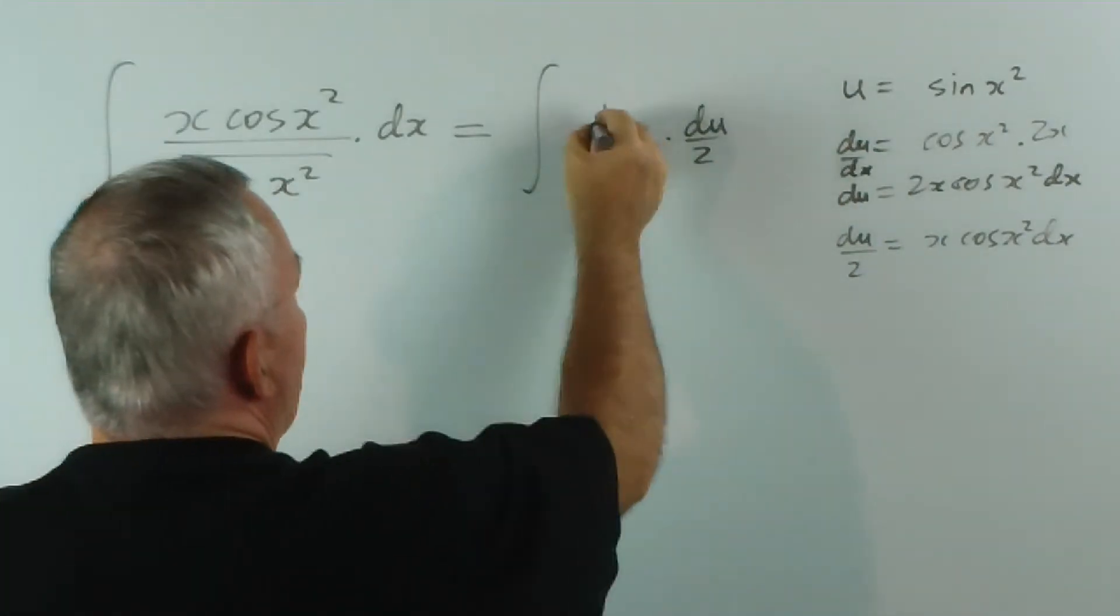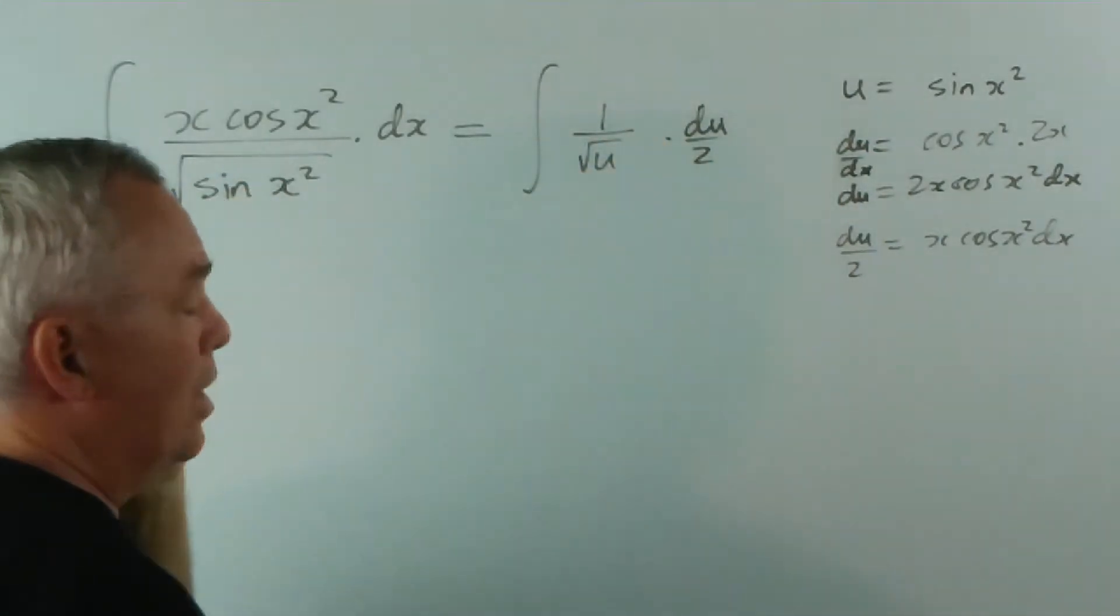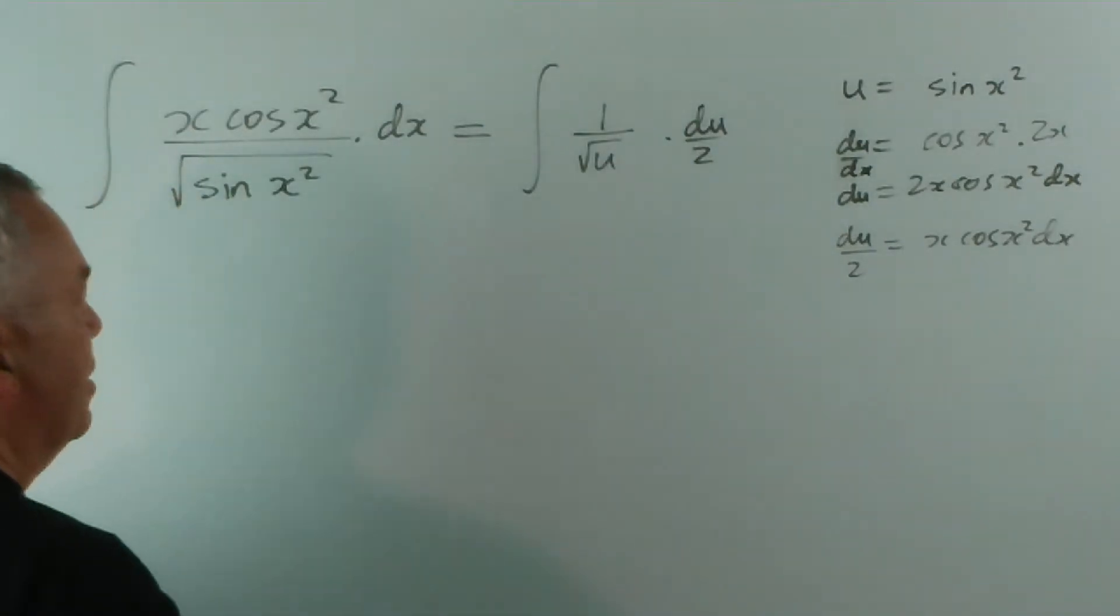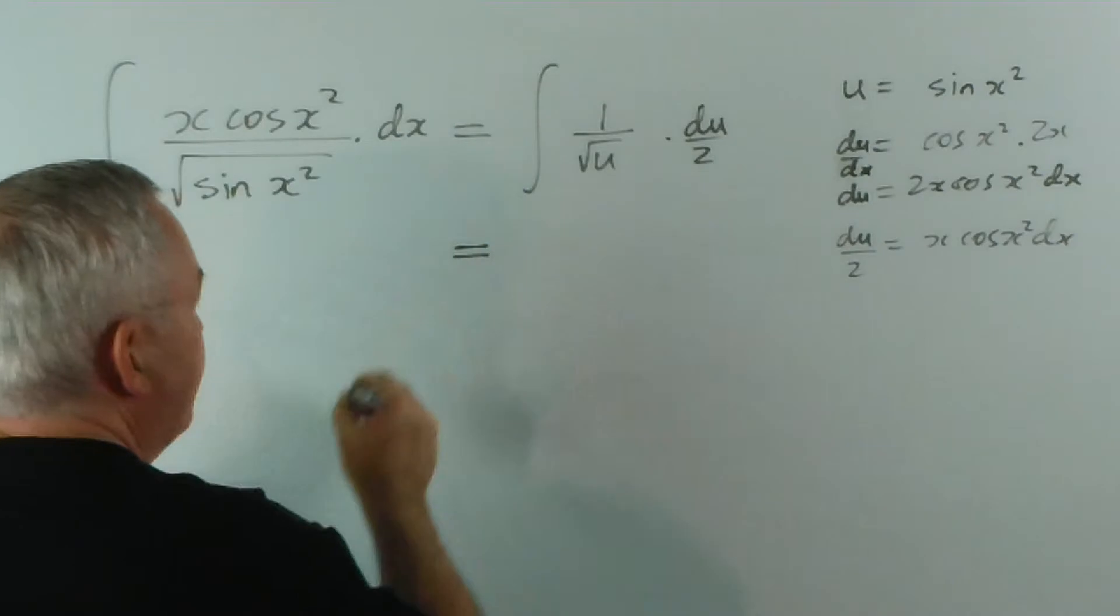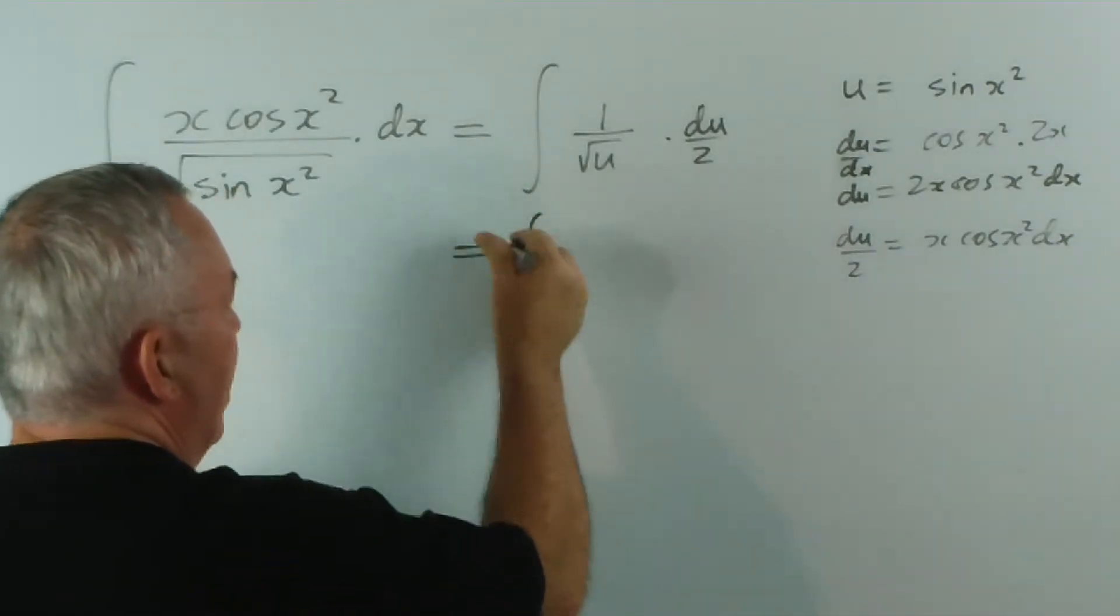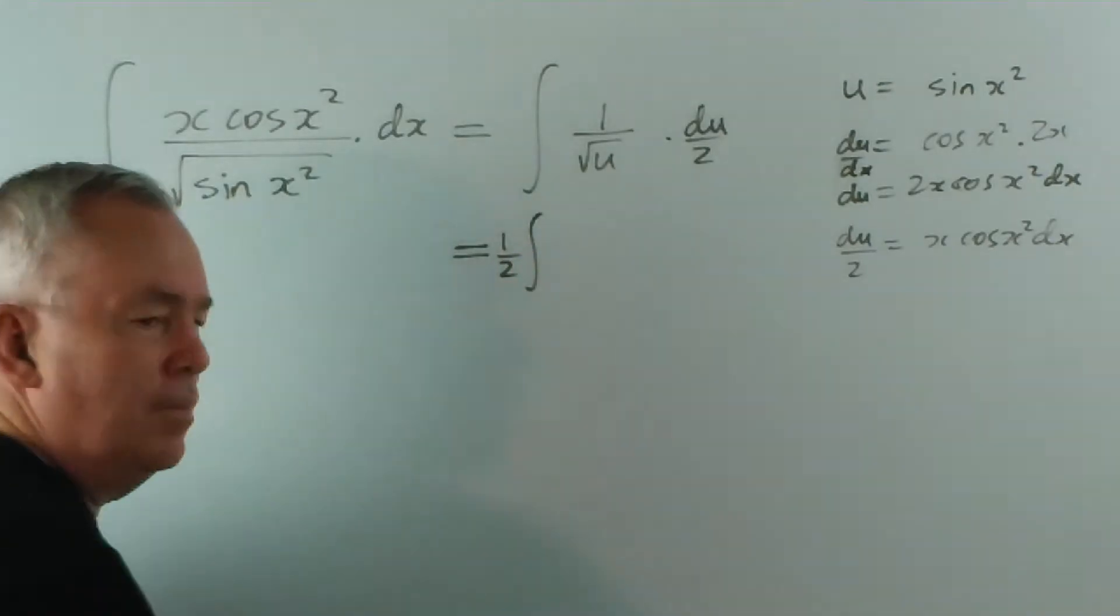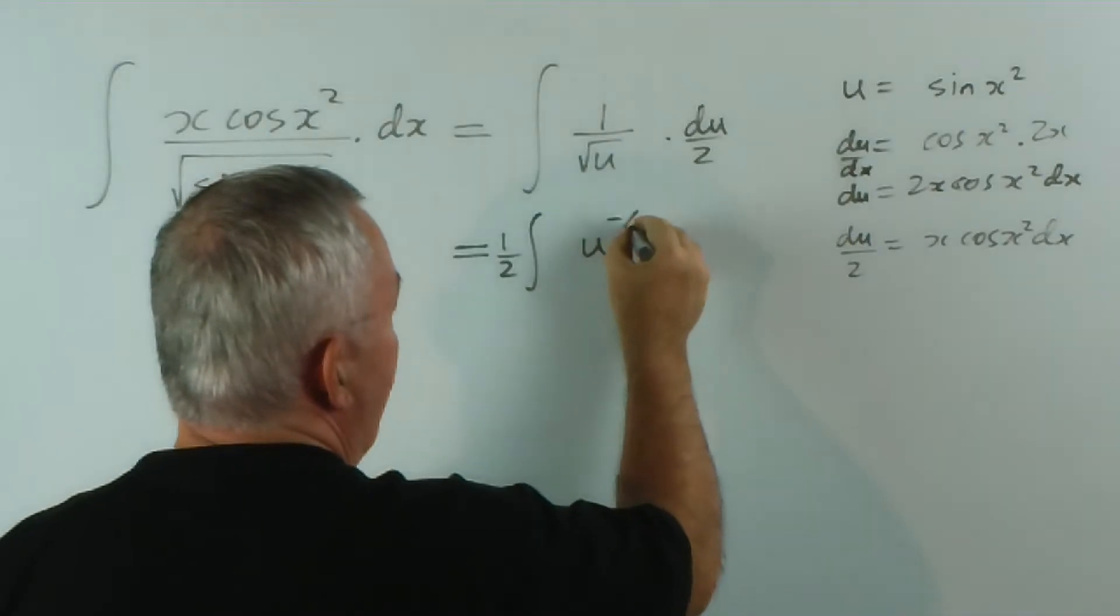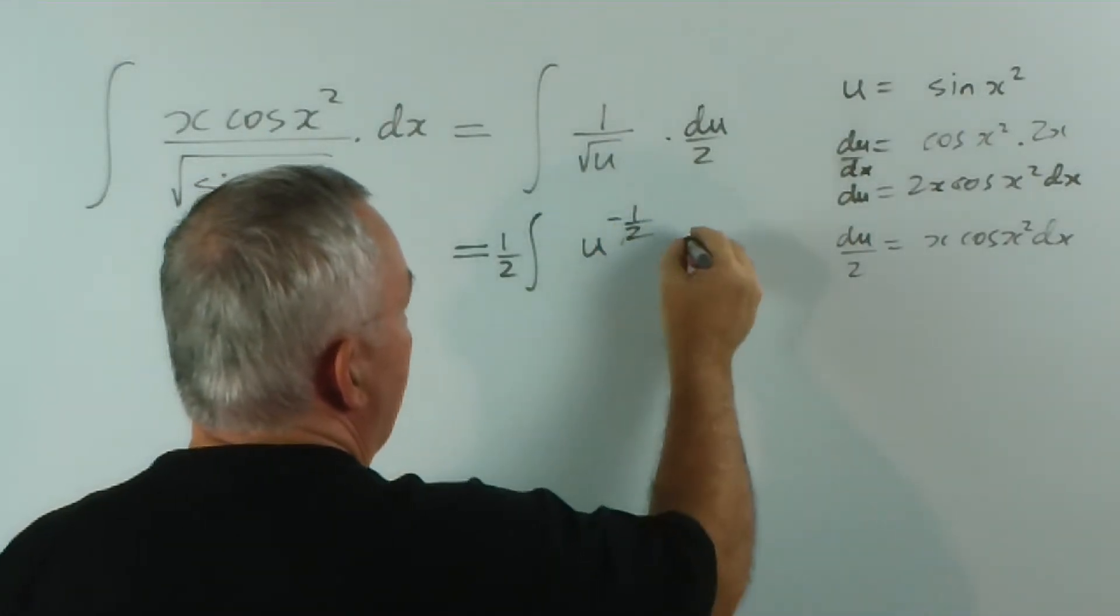And this, I'm going to replace the sin x squared with u, so it's going to be 1 on square root of u. Well, that looks a lot simpler. It's decluttered what we were looking at. This is the integral. I'm going to move the 2 out the front. This I'm going to write as u to the negative half, du.